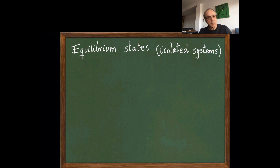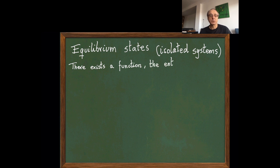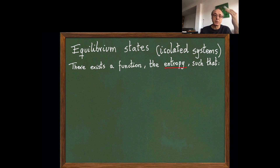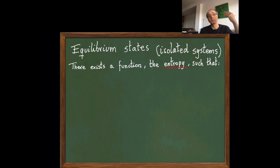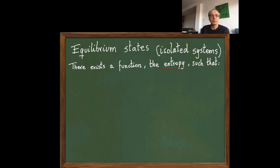The basic problem of thermodynamics is to characterize these equilibrium states. The system will have some macroscopic magnitudes that can take on different values, and the problem is to find the values of these magnitudes at equilibrium. If I let the system evolve, these variables will change in time, and if they reach a constant value for long times, those are the equilibrium values.